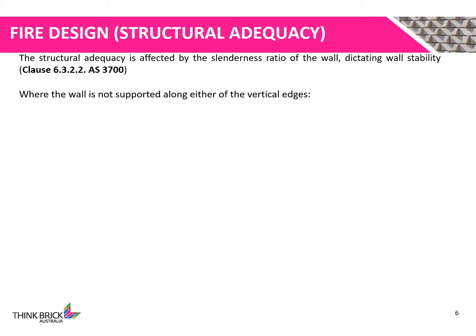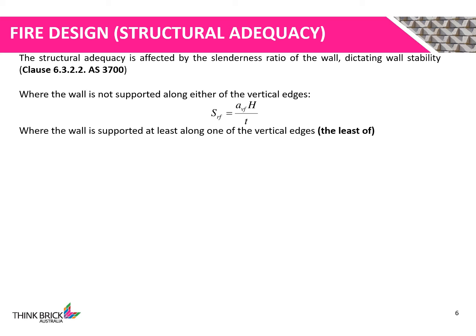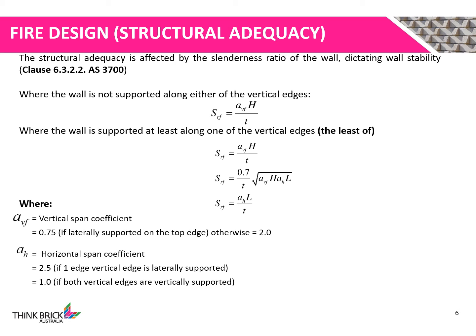The structural adequacy of a clay masonry wall is affected by the slenderness ratio of the wall, dictating the wall stability. If the wall is not supported along either of the vertical edges, the following formula may be used. However, if the wall is supported on one of the vertical edges, the minimum value generated from these three formulas is to be used. Depending on how the wall is supported, the parameters used within these formulas will also vary. For walls which are non-load bearing, the structural adequacy value is irrelevant as the wall doesn't provide any structural adequacy.